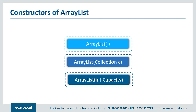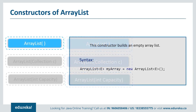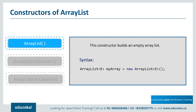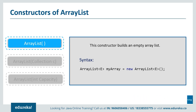Now let's see the various constructors supported by Java ArrayList. The first is ArrayList(). This constructor builds an empty ArrayList. In terms of syntax, 'myArray' is a reference to an ArrayList that holds references to objects of type E. The array has an initial capacity of 10 cells, although the capacity will be increased as needed as references are added to the list, and cells will contain references to objects of type E.